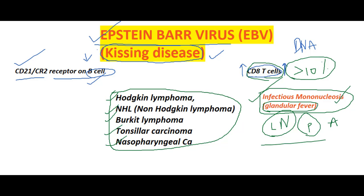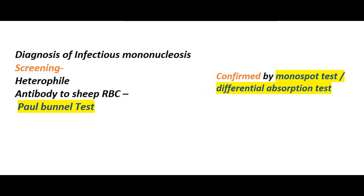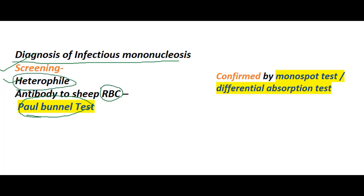Coming to the diagnosis of infectious mononucleosis, there is a screening test called the Paul-Bunnell test. Here we can detect heterophile antibodies to sheep RBC. This disease is confirmed by the monospot test and the differential absorption test. This is the diagnosis of infectious mononucleosis.